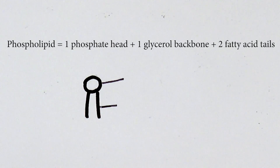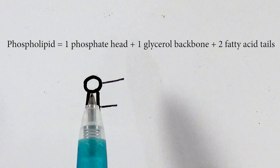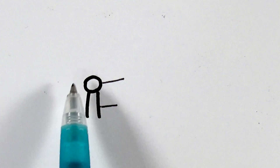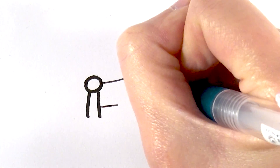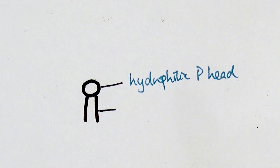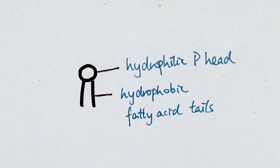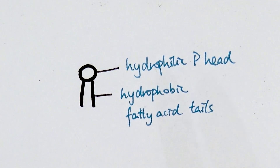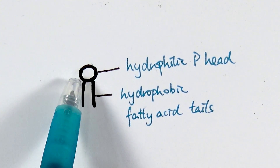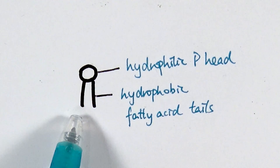You may already know from the biochemistry chapter that a phospholipid is made of one phosphate head, one glycerol molecule, and two fatty acid tails. In the fluid mosaic model, to simplify that, we use this particular diagram. The circle represents the hydrophilic phosphate head, and the two legs represent the hydrophobic fatty acid tails. It is really important to know that the phosphate head is hydrophilic — water loving — and the tails are hydrophobic, meaning they repel water.